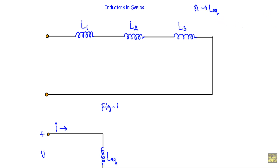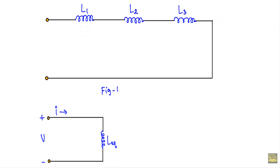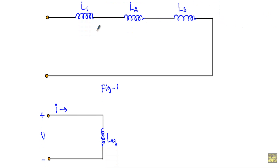For example, in figure 1 I have total 3 inductors L1, L2 and L3. They are connected in series because one end of L1 is connected with another end of L2, and one end of L2 is connected with one end of L3. So they are connected in series.